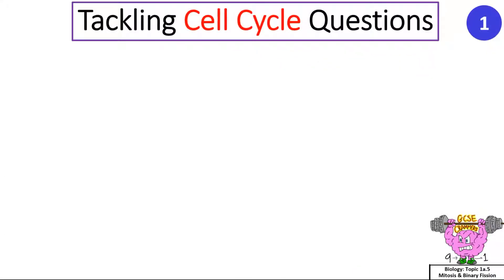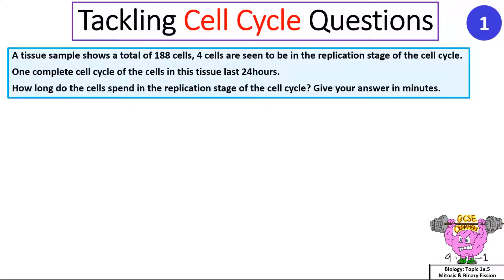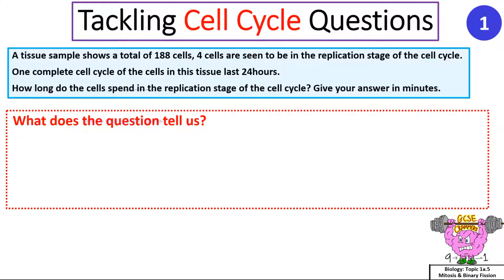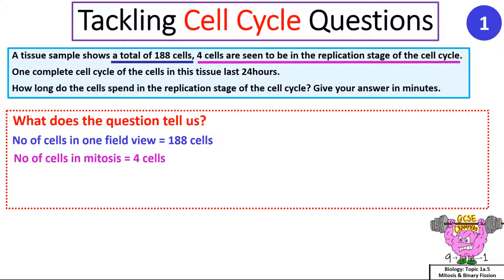Tackling cell cycle questions 1. A tissue sample shows a total of 188 cells. Four cells are seen to be in the replication stage of the cell cycle. One complete cell cycle of the cells in this tissue lasts 24 hours. How long do the cells spend in the replication stage of the cell cycle? Give your answer in minutes. What does the question tell us? The number of cells in one field view is 188 cells. The number of cells in mitosis is 4 cells. And the time of one cell cycle is 24 hours.